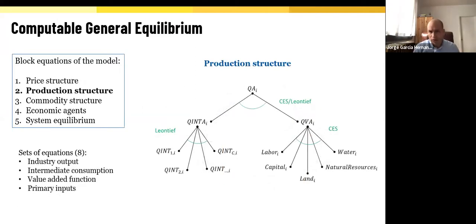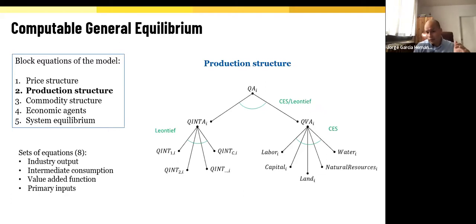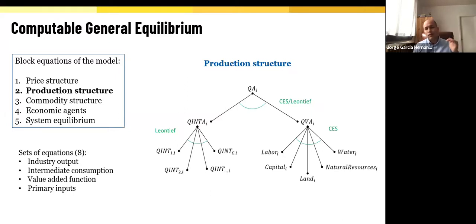The second block is the production structure, defined at three levels. At the very top, the user can specify whether they want industry output to be a constant elasticity of substitution function or a Leontief one. At the second level, intermediate inputs are defined as a Leontief function, which is common in CGE models. For value added, we have defined a constant elasticity of substitution based on primary inputs. This block has eight sets of equations.